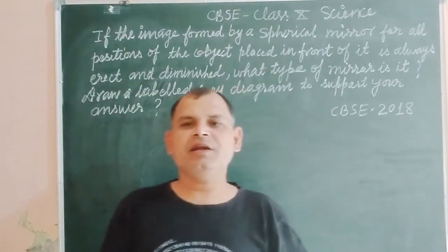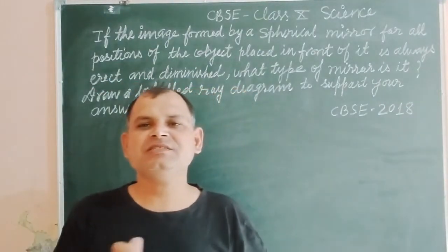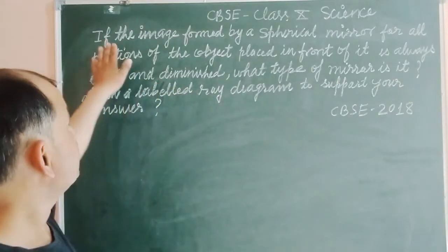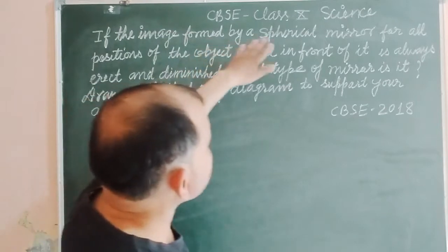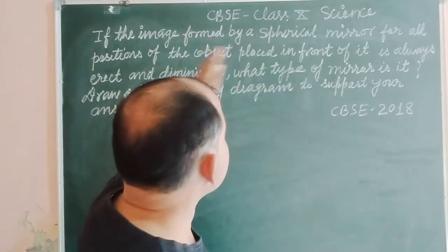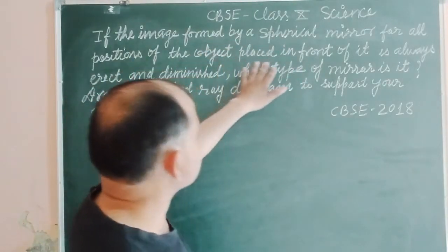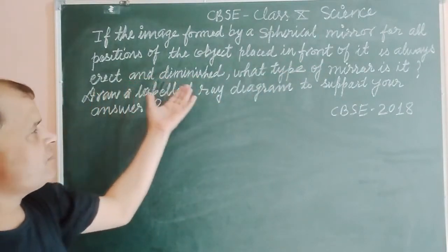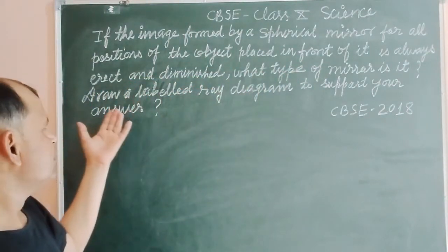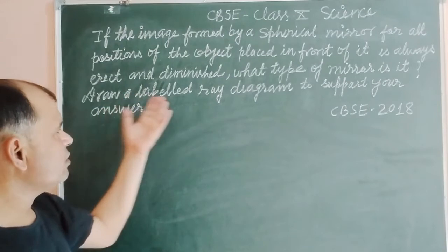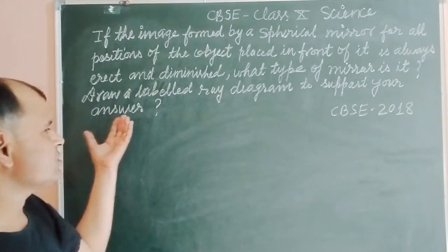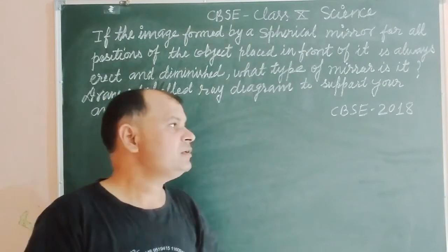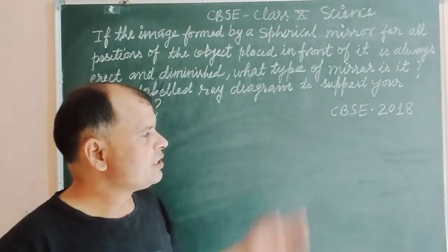Hello students, welcome to CVSC class 10 science solution series. The question is: is the image formed by a spherical mirror, for all positions of the object placed in front of it, always erect and diminished? What type of mirror is it? Draw a labeled ray diagram to support your answer. This question was asked in CVSC class 10, 2018 exam.